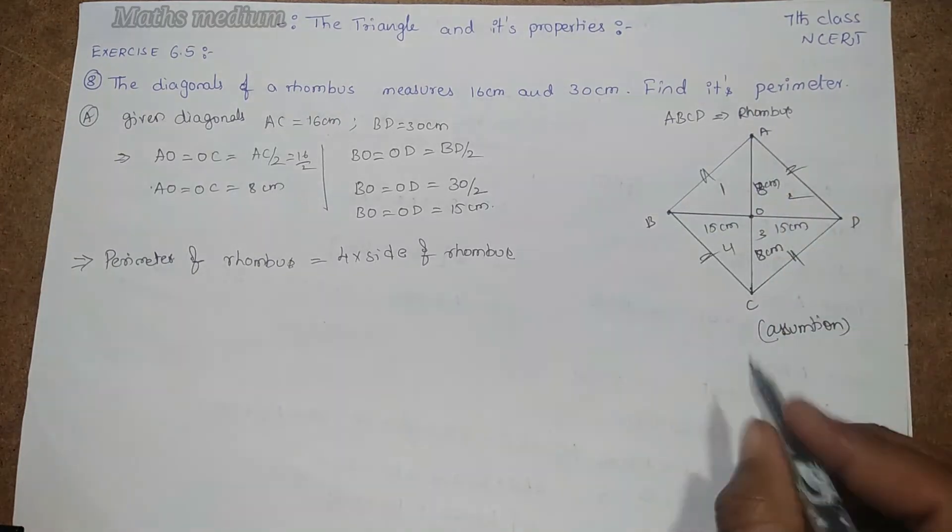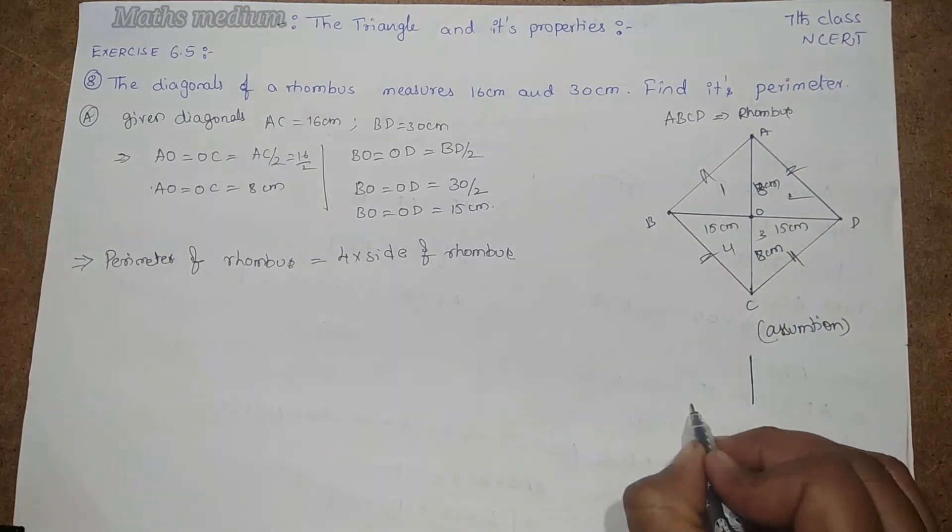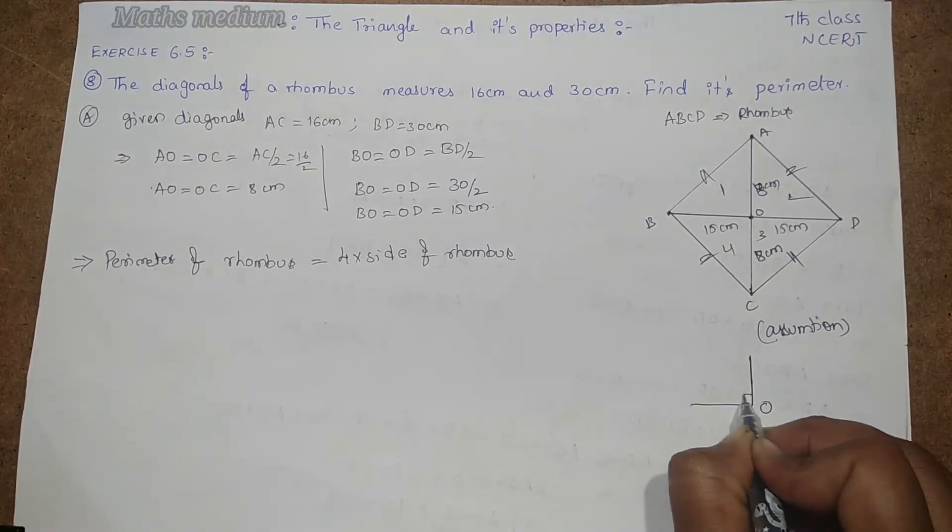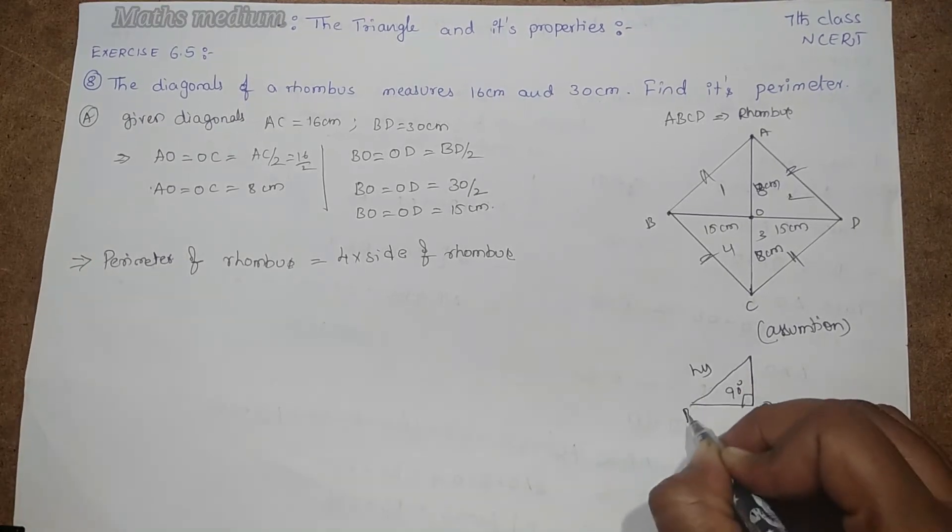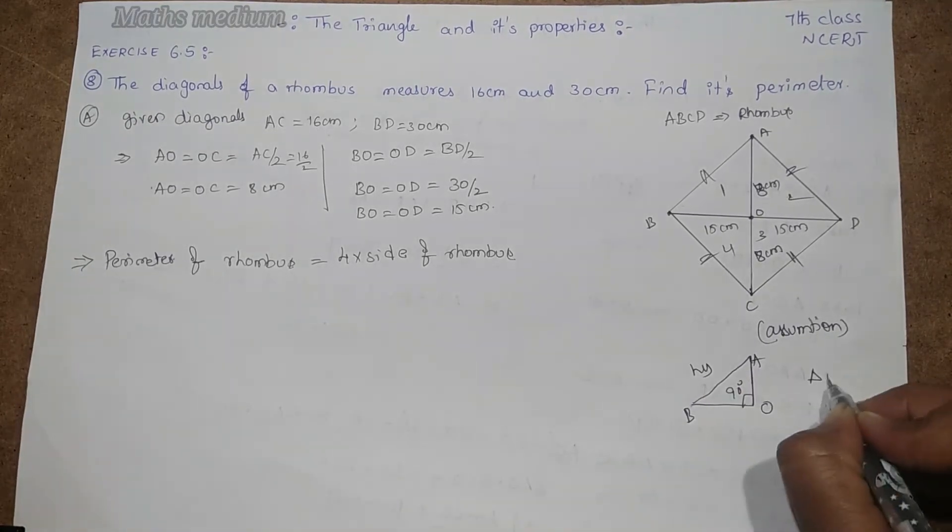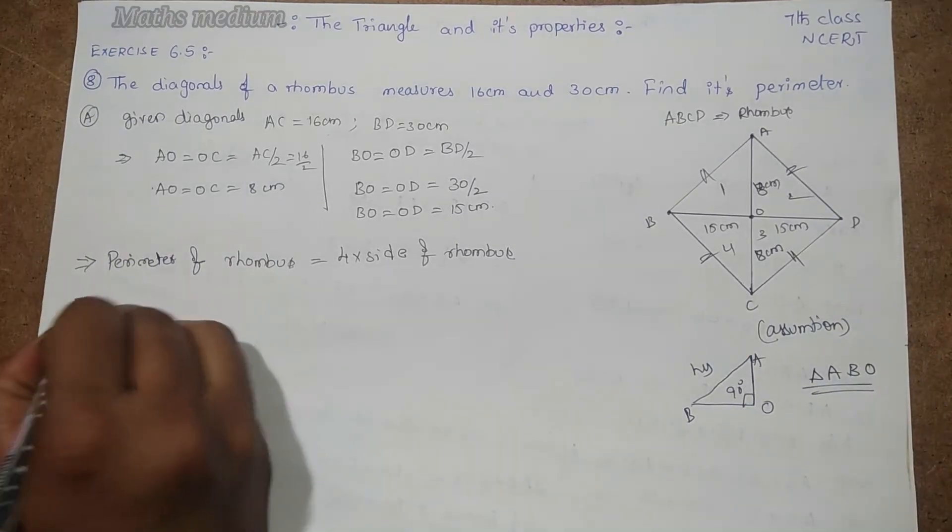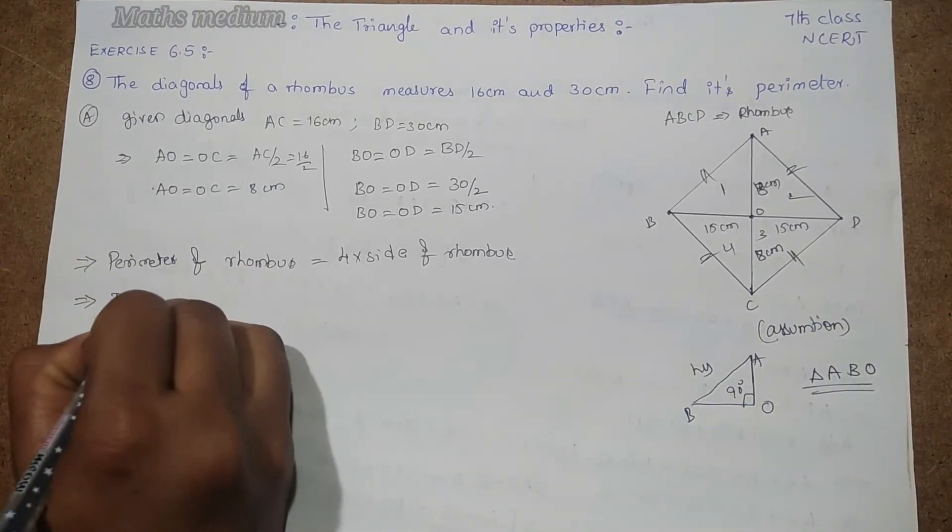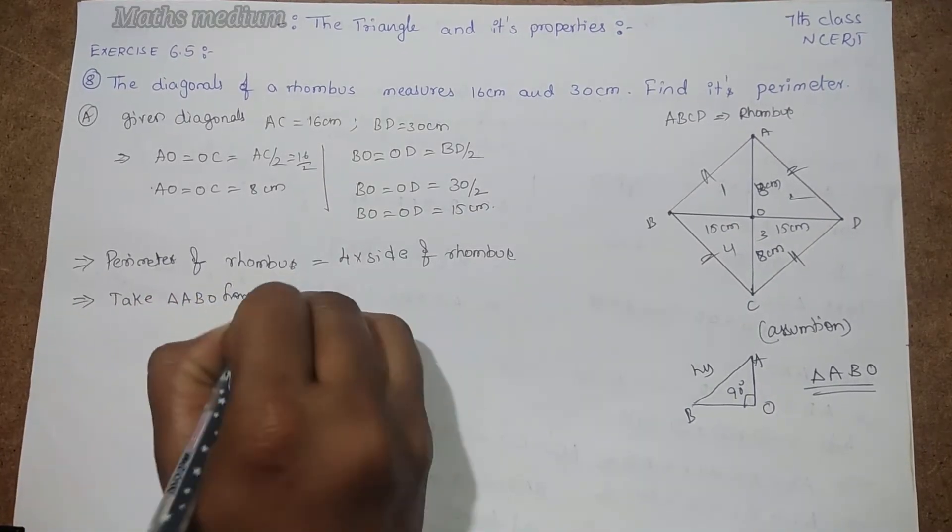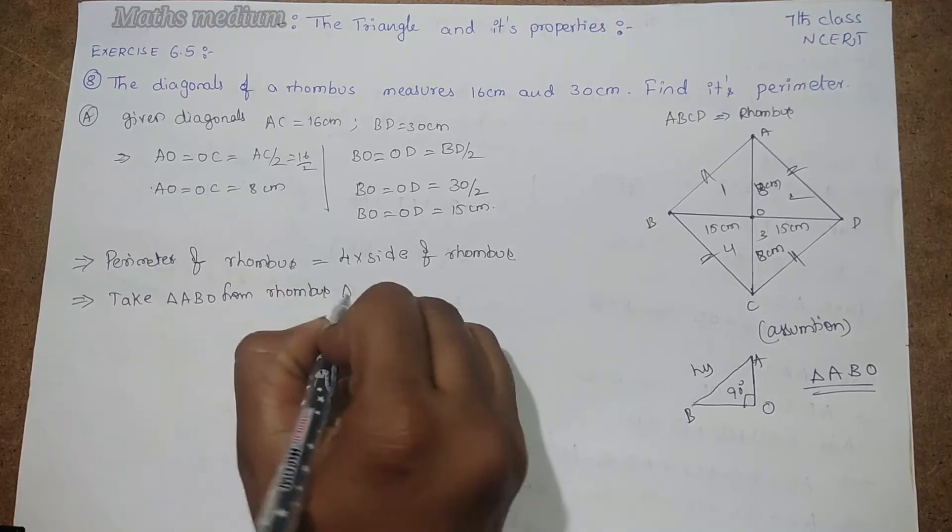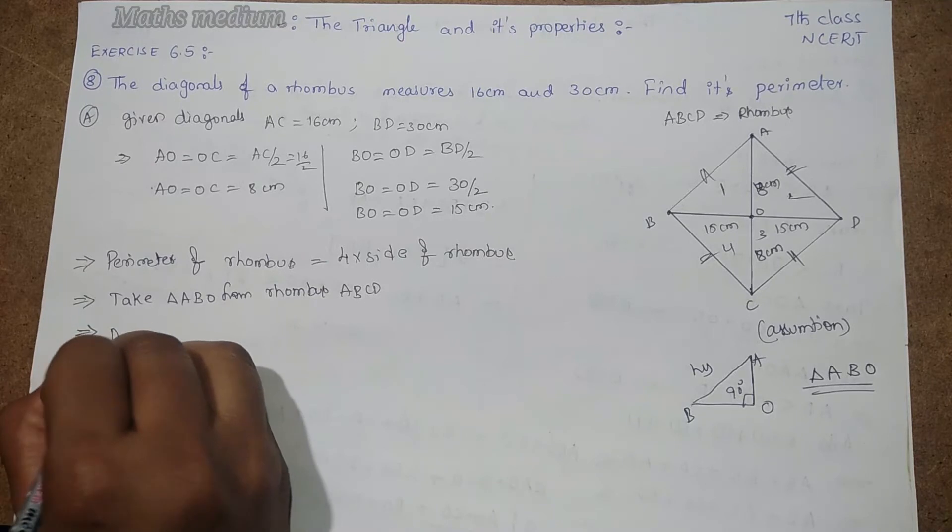Let's take any triangle here. I am taking A, B, O. This is 90 degrees. This is the hypotenuse. Take triangle ABO from the rhombus ABCD. Now apply Pythagoras property.